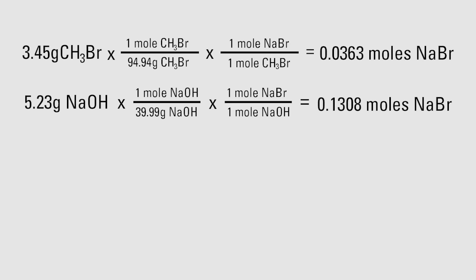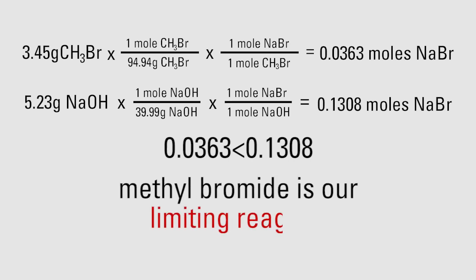We can see that the 3.45 grams of methyl bromide is going to produce less moles of bromide than hydroxide, and thus all of the methyl bromide will react completely. Therefore, methyl bromide is our limiting reagent.